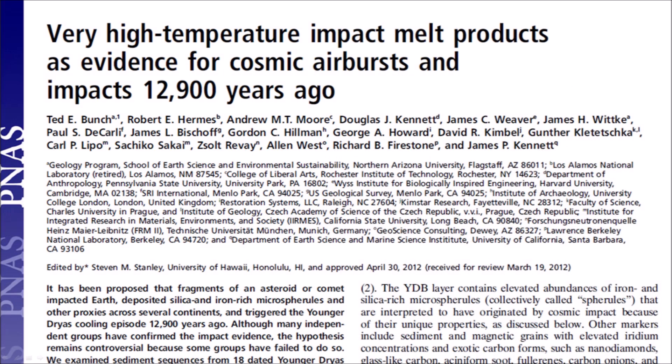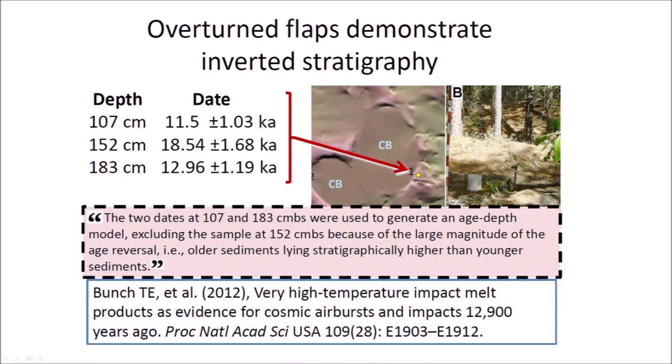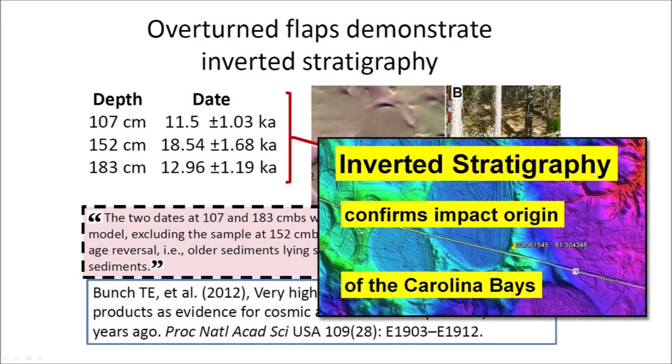Ted Bunch and 17 co-authors published a 2012 paper titled 'Very High-Temperature Impact Melt Products as Evidence for Cosmic Airbursts and Impacts 12,900 Years Ago,' describing siliceous scoria-like objects and spherules composed of shock-fused vesicular siliceous glass. The paper also described inverted stratigraphy in the rim of a Carolina Bay in Blackville, South Carolina. At the time, the Carolina Bays were thought to have formed by gradualistic wind and water mechanisms, so the significance of the inverted stratigraphy was not recognized and the anomalous reading was discarded. Now that the rim of Flamingo Bay has also been shown to have inverted stratigraphy, the hypothesis for the impact origin of the Carolina Bays appears to be gaining further support.